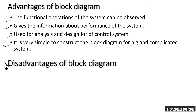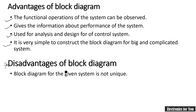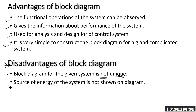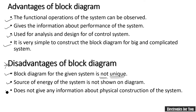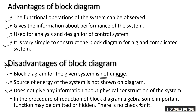The disadvantages of block diagram: first, the block diagram for a given system is not unique — it may be different from person to person. Second, the source of energy of the system is not shown in the diagram. Third, block diagram does not give any information about the physical construction of the system. And last, in the procedure of reduction of block diagram algebra, some important functions may be omitted or hidden, and there is no check for it.